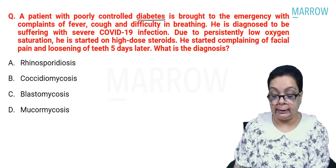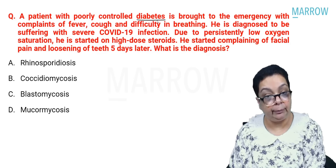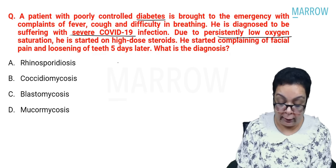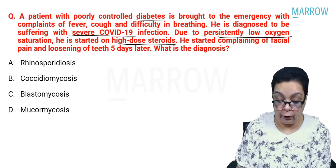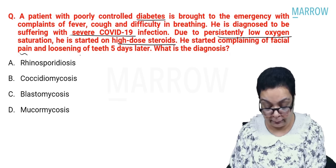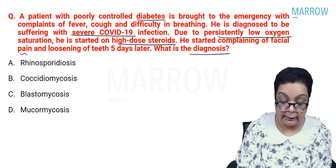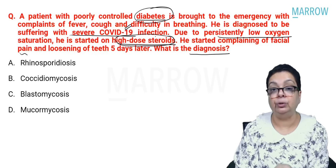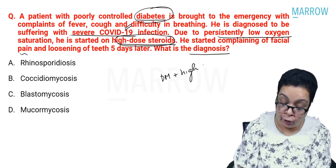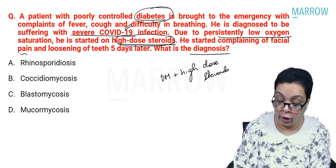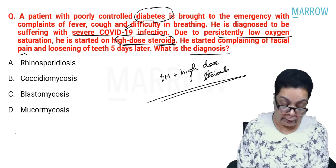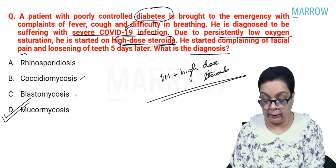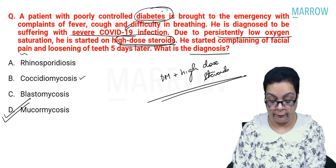A patient with poorly controlled diabetes and severe COVID-19 was started on high-dose steroids and five days later developed facial pain and loosening of teeth. Diabetes plus high-dose steroids are the two very important risk factors for mucormycosis. HIV is not a risk factor for mucormycosis. Risk factors include poorly controlled diabetes, high-dose steroids, elevated free iron, deferoxamine therapy, neutropenia, hematological malignancies, and immunosuppressive therapy for transplantation.